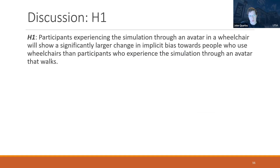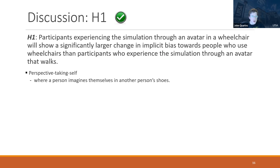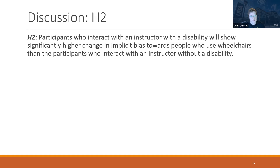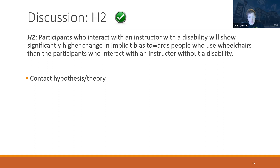For hypothesis one — why the wheelchair reduced implicit bias — we accepted the hypothesis, thinking this was similar to a perspective-taking interaction where you're putting yourself in the shoes of others. For hypothesis two — why narrators with disabilities seemed to work better — we looked at this through the contact hypothesis theory: more interaction with someone with disabilities leads to less negative bias toward them.